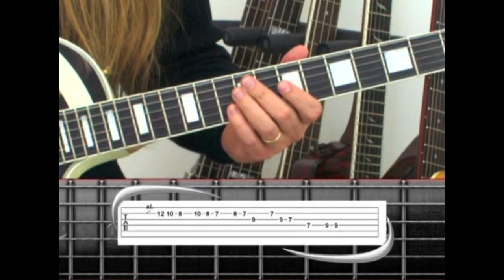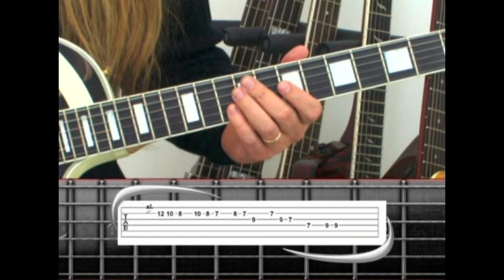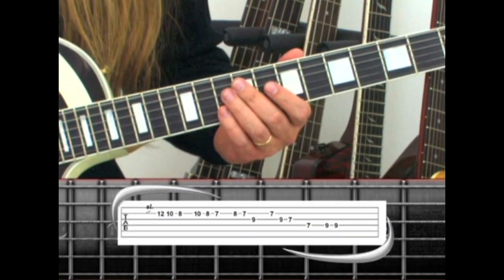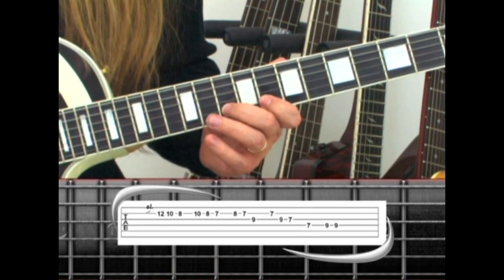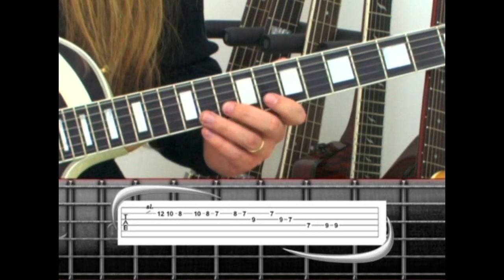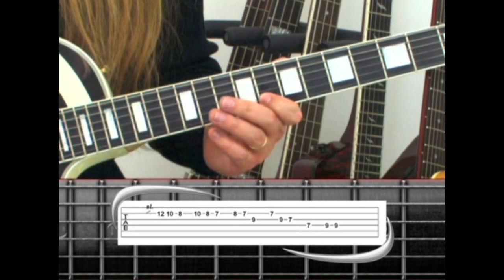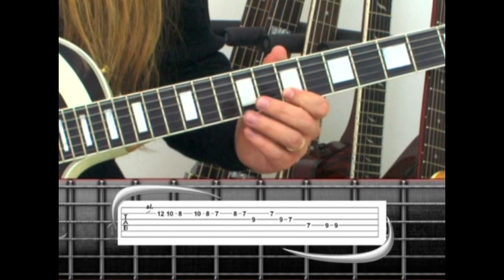Here we use a descending run with increments of three in phrase 22. Start with the pinky slide on the second string to the twelfth fret, ten, eight, then ten, eight, seven, eight, seven.